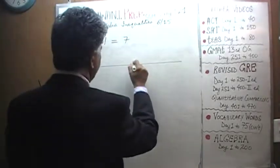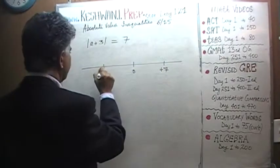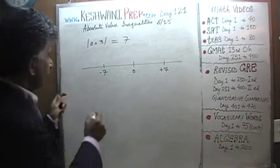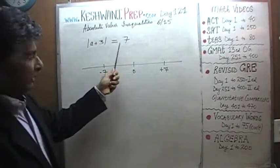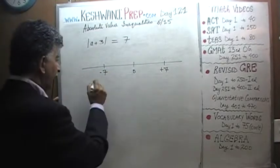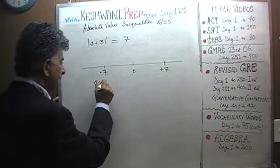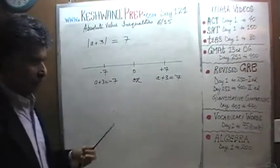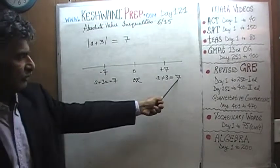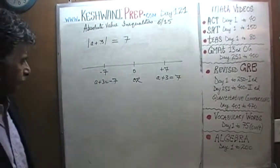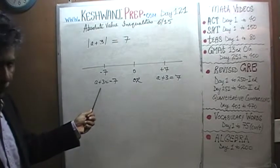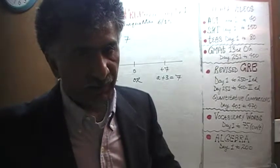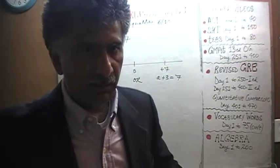Here is our number line. Here is 0, here is positive 7, and here is negative 7. That's quite straightforward, which means the absolute value of a plus 3 will be equal to 7 when either a plus 3 is equal to negative 7, or a plus 3 is equal to positive 7. The absolute value of negative 7 equals 7, and the absolute value of 7 equals 7.